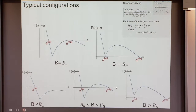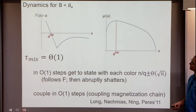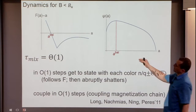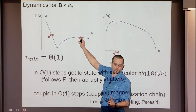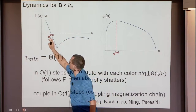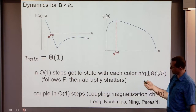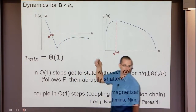What happens exactly at the thresholds requires finer analysis. Below the first (uniqueness) threshold, the mixing time is theta of one. The value of f tells you by how much the size of the largest component decreases each step — it always decreases by a big amount, the decrease speeds up, and you hit the point where everything shatters into the uniform distribution in a single step. So the mixing time is O(1) because you are always decreasing fast, hitting the uniform distribution.